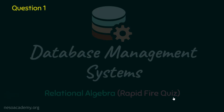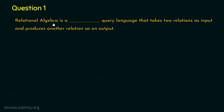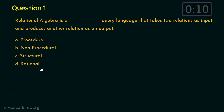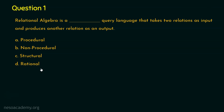Let's step into question number one. The question is: relational algebra is a dash query language that takes two relations as input and produces another relation as an output. Option A: procedural. Option B: non-procedural. Option C: structural. Option D: rational. The right answer is option A, procedural, because it instructs how to execute a task with a set of commands — we need to specify what to do and also how to do it.